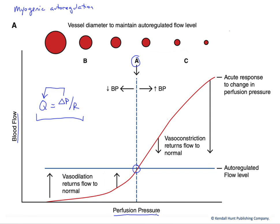You might say, well, perfusion pressure really isn't going to change that much — blood pressure is fairly constant. However, the ventricle generates the blood pressure and that pressure then falls the farther you move out through the cardiovascular circuit. Therefore, tissues closer to the heart would experience a higher perfusion pressure than tissues farther away. Does this mean they need more blood flow? Do your hands need more blood flow than your feet? Not necessarily. So we need to accommodate this difference in distance from the heart with this myogenic effect.